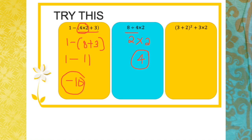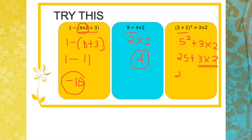Last example: (3 + 2)² + 3 × 2. We do inside the brackets first: 3 + 2 = 5, giving 5² + 3 × 2. Then the index: 25 + 3 × 2. Between addition and multiplication, multiplication comes first: 3 × 2 = 6. So 25 + 6 = 31.